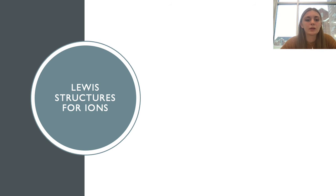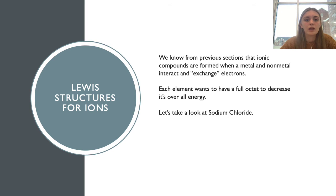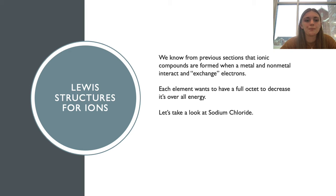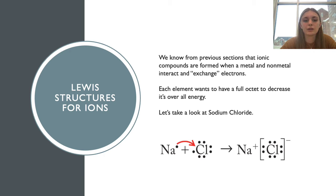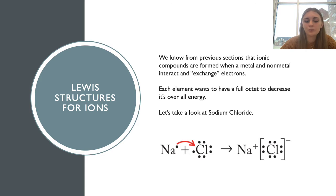Lewis structures for ions are a little different from covalent compound structures. Ionic compounds are formed when a metal and non-metal interact and exchange electrons — the atoms are giving and taking electrons. In this reaction each element wants a full octet, so it gives or takes however many electrons it needs. Looking at sodium chloride: sodium has one valence electron and chlorine has seven, so sodium will give up that electron and chlorine will take it.